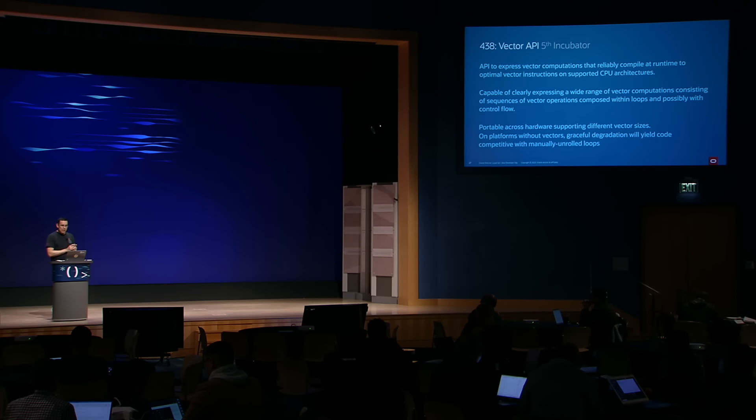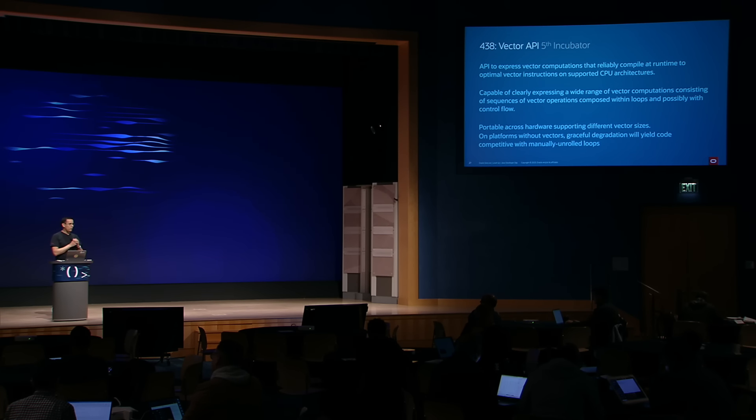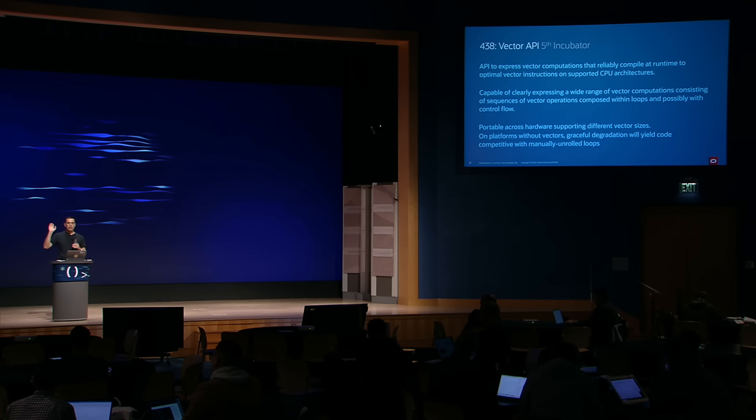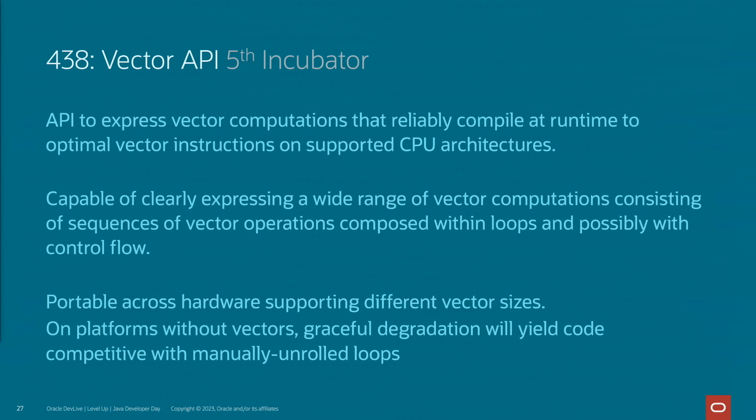The second API improvement is in a fifth incubator — and I think that's a record, the longest incubator we've had so far. This is the Vector API. Vector computations allow systems to execute operations on vectors instead of applying the same operation to several values one at a time, which can result in significant performance improvements. HotSpot already supports auto-vectorization, so it can sometimes detect when a scalar operation can be transformed to superword operations and mapped to vector instructions. The problem is that the set of operations is very limited and fragile to changes in code shape.